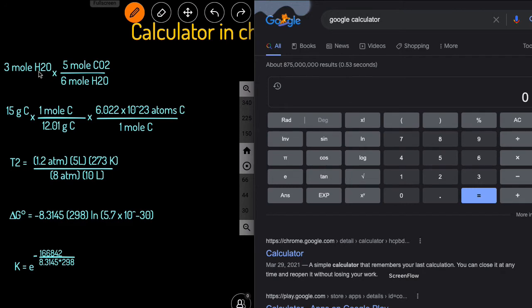The first one, to enter this, we would do 3 multiplied by... there's two ways you can enter this. You can put into parenthesis, 5 divided by 6 into parenthesis, and you'll get 2.5. Or you can also enter it like this. You can do 3 multiplied by 5, and then divide by 6 without the parenthesis, and you'll still get 2.5.